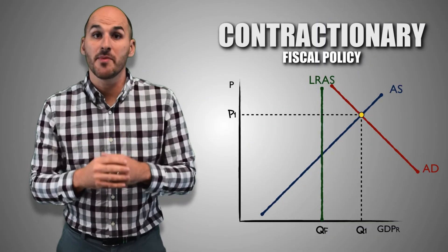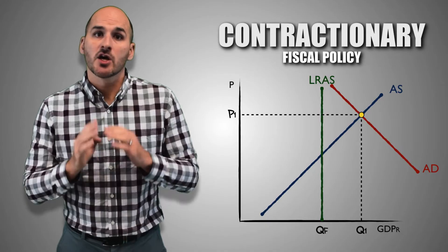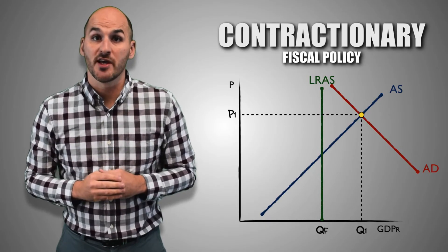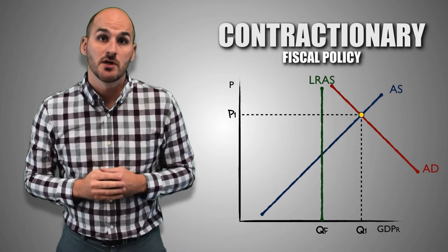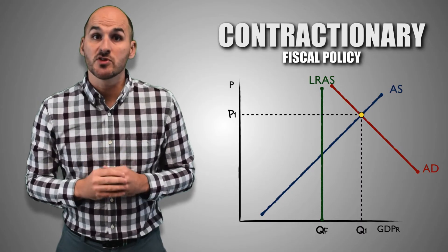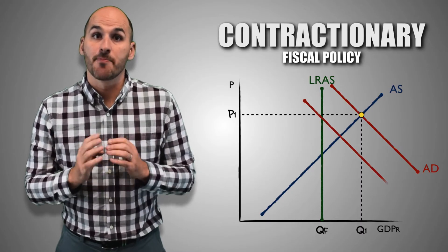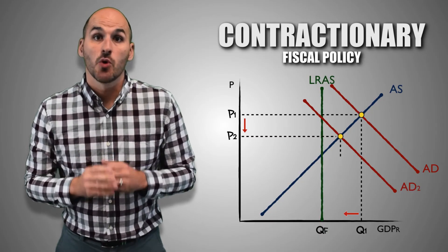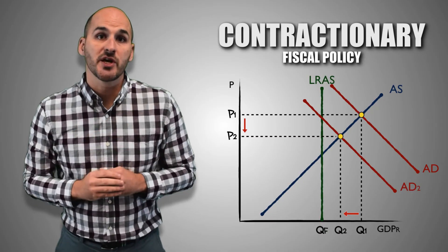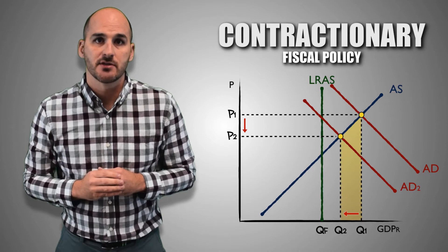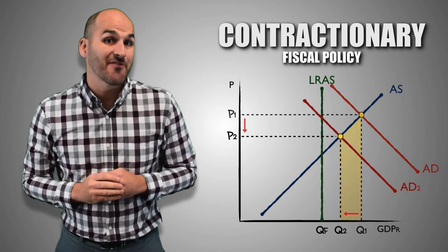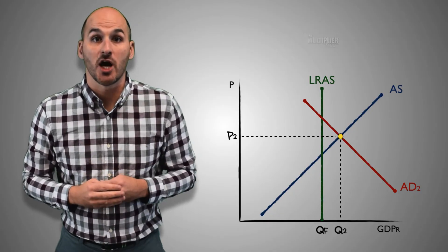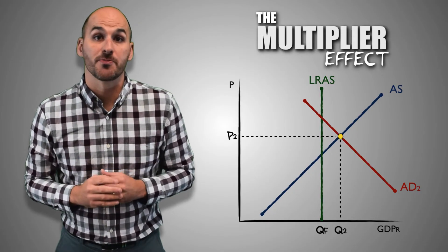When government increases personal taxes, government is trying to slow consumer spending by taking a greater portion of disposable income away from consumers. When consumers lose their income to taxes, they purchase fewer goods and services, and aggregate demand will decrease, which causes a degree of short-run economic contraction. However, even after this contraction, the effects of the fiscal policy continue to ripple throughout the economy through the multiplier effect.